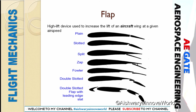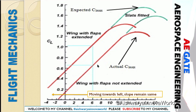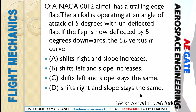Before that, let me explain what a flap is. A flap is a high-lifting device used to increase the lift of an aircraft wing at a given airspeed. Looking at the Cl versus alpha curve: the first line is when the flap is not extended, and the second curve is when the flap is extended. The slope remains the same — only the curve shifts toward the left. So the right option is option C.